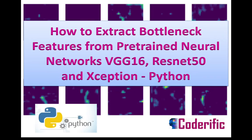Hello and welcome to Coderific. In this video we are going to see how we can extract bottleneck features from pre-trained neural networks such as VGG16, ResNet50, and Xception in Python. In transfer learning, we take a pre-trained model with its trained weights and remove the fully connected layers at the end. The output of the last layer right before the fully connected layer is called the bottleneck features. These features represent the activation map from the last convolution layer in the network.